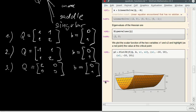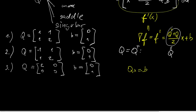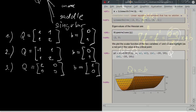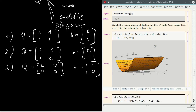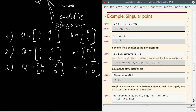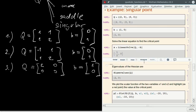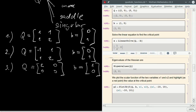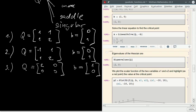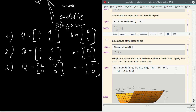What if we change vector B to [1, 0] instead? In this case the right-hand side lives in the range of Q, so the equation does have a solution. The critical point is at (−1/2, 0), the eigenvalues are 2 and 0, and the first-order necessary condition of optimality is satisfied. Let's have a look at the graph of the function.